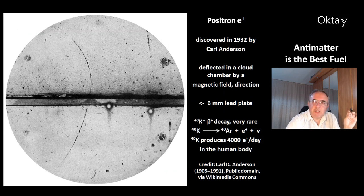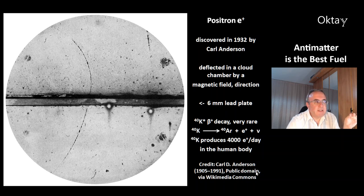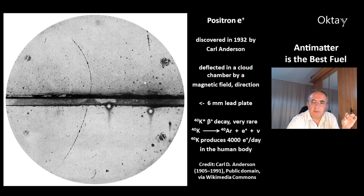This is a picture from the discovery of the positron. It was discovered in 1932 by Karl Anderson. This picture is of a cloud chamber. You can see the positron, which is deflected by a magnetic field. The change of direction tells you it's a positron, not an electron, because the electron would take another path.